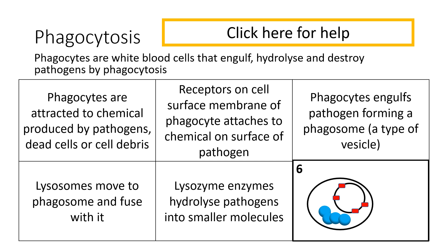The enzyme poured in by the lysosomes is called lysozyme. The lysozyme hydrolyzes — breaks up — the pathogen into smaller molecules. What we end up with is the antigen from the pathogen left over, which can then be presented on the surface of the phagocyte. We refer to this as an antigen presenting cell.